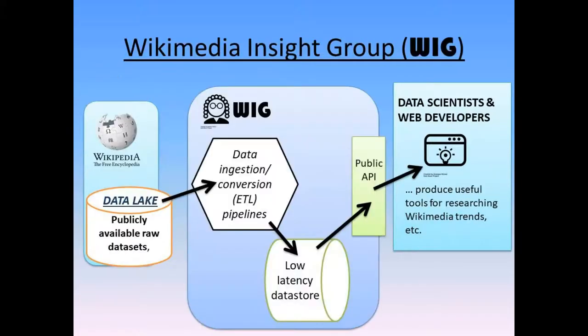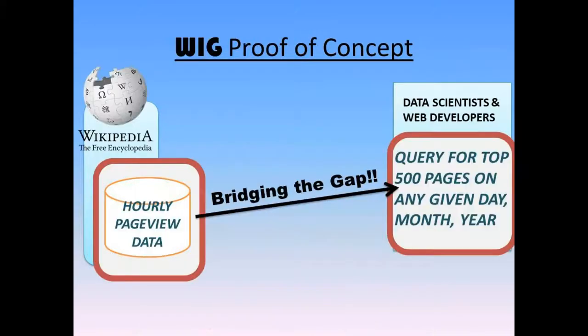To bridge this gap, I envisioned the Wikimedia Insight Group (WIG), a small team of data engineers who would get some kind of philanthropic funding to step into the gap with appropriate big data technologies to aggregate, transform, and index the data in useful ways, to make it available to the data scientists and web developers of the world via simple, low-latency queries. Considering the possibility that this vision could become a reality, I started to think of my project as a proof of concept for WIG.